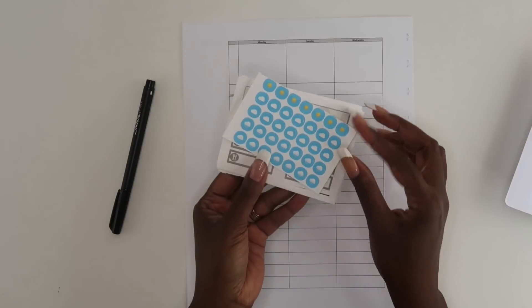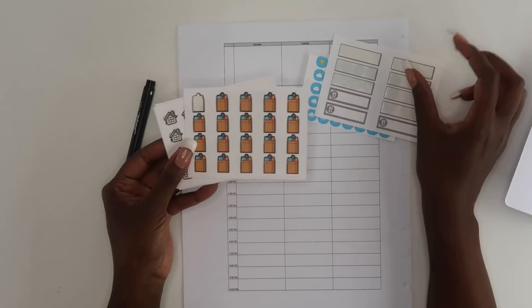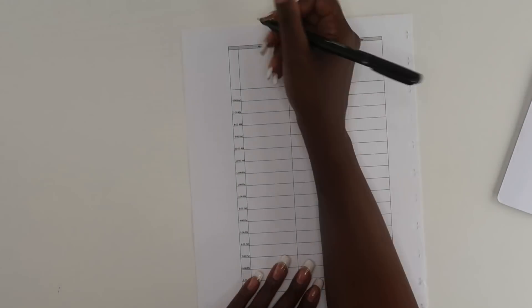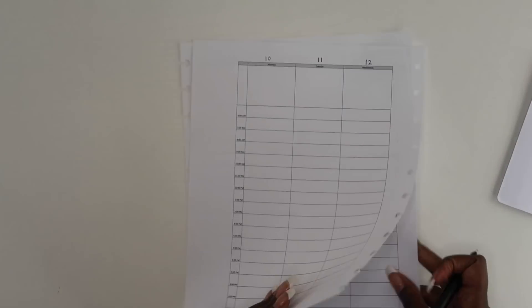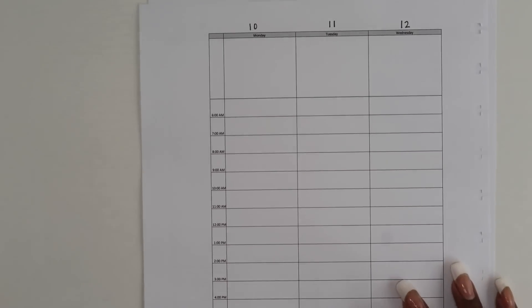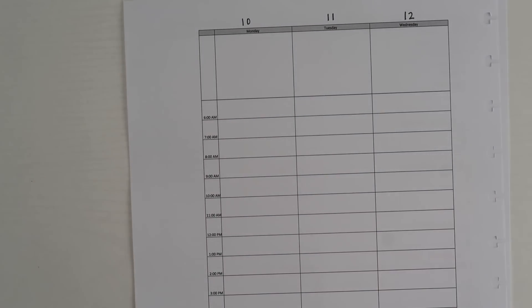I'm also going to be using all of the functional stickers that I sent out in my sticker kit this month. If you don't know, I have Tom Squad, which is my Patreon membership group. It's $10 a month and you get six sheets of stickers from me every single month.